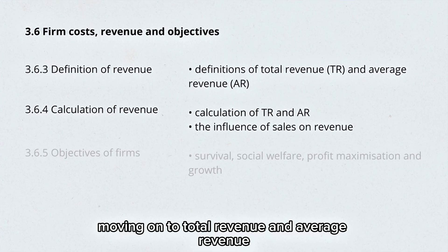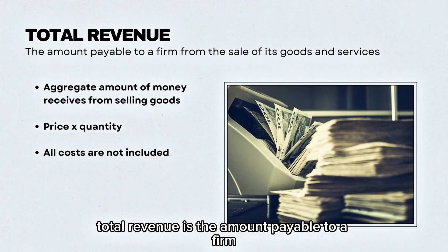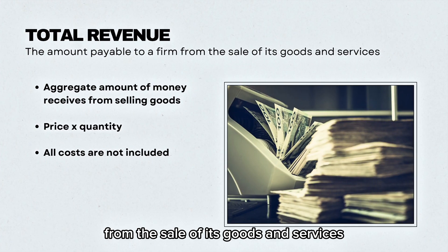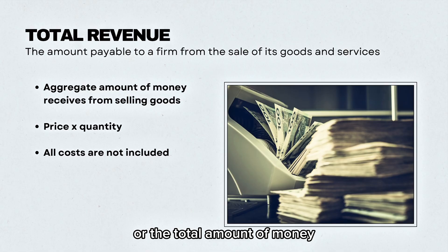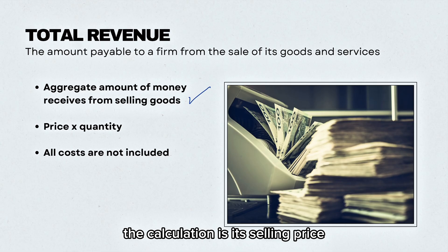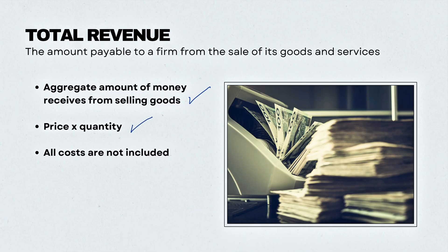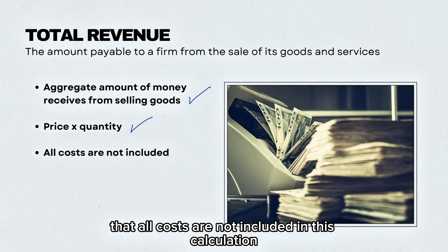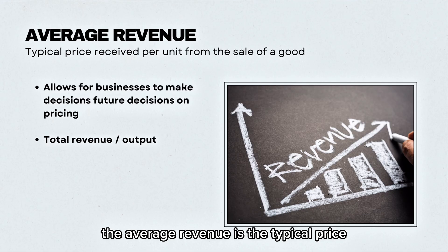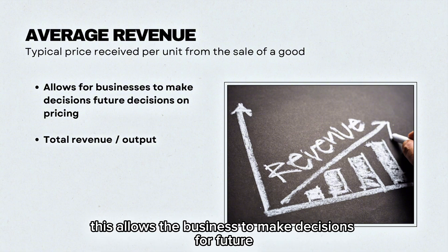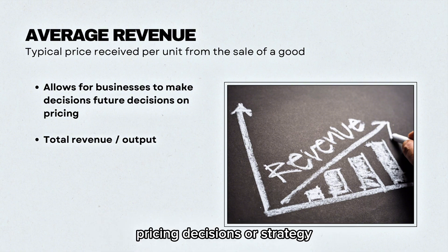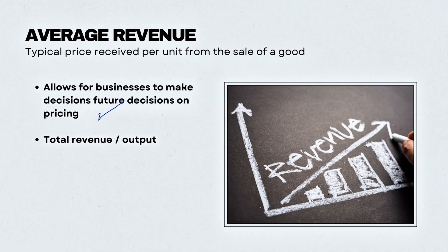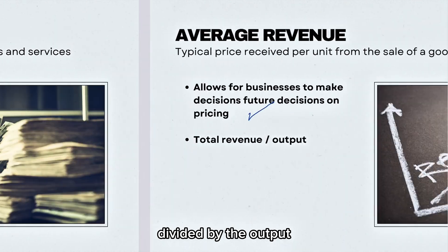Moving on to total revenue and average revenue. Total revenue is the amount payable to a firm from the sale of its goods and services — the total amount of money a business receives from selling its goods and services. The calculation is selling price multiplied by quantity, and remember that costs are not included in this calculation. Average revenue is the typical price received per unit from the sale of a good, which helps businesses make future pricing decisions. The calculation is total revenue divided by the output.